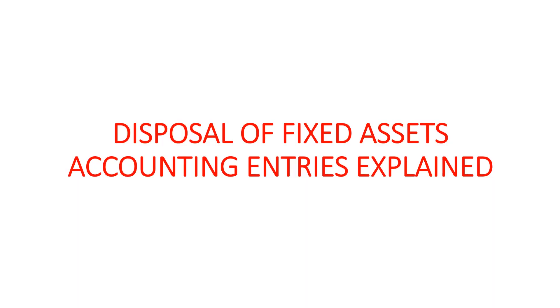When we buy fixed assets in our businesses, they start operating, helping us generate revenue. And then comes a time when we need to dispose them off. When we are disposing of a fixed asset, it is supposed to be accounted for as well. In today's session, I am going to show you how we dispose of a fixed asset. Take note that when we are disposing of a fixed asset, it doesn't necessarily mean that the fixed asset has to be fully depreciated. Sometimes you can choose to dispose of a fixed asset when it still has a useful life ahead. So whether you dispose it off in the middle of its useful life or after it has been fully depreciated, these are the accounting entries that you're going to have to do.